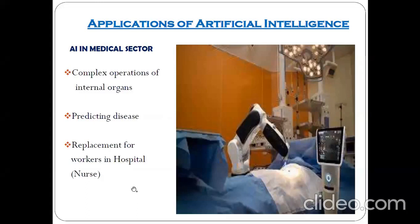The second point in medical AI is predicting expertise. The third is the replacement of workers in the hospital. During the corona period, some hospitals deployed robots — because even a nurse has chances of having corona. If you replace the nurse with robotics, that is a great application: replacement of workers in the hospital.